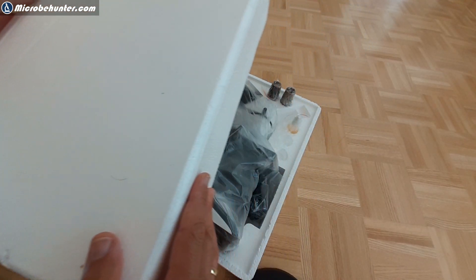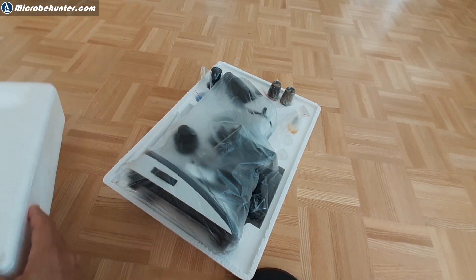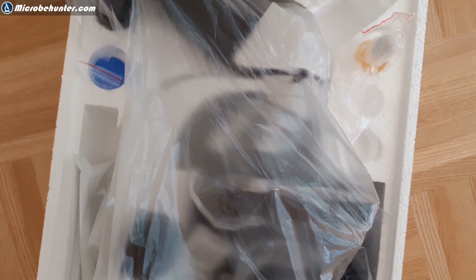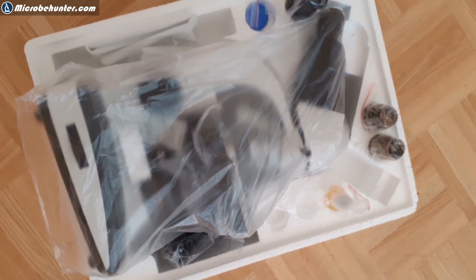This is how it looks like, everything comes nicely packaged here. We've got in school the monocular version with only one eyepiece but this one here allows you to connect a camera to the photo tube that it has. So now let's have a look at the different parts of the microscope.